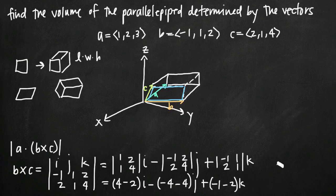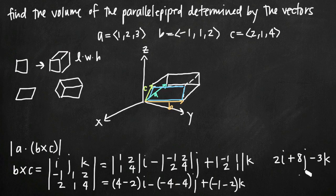Writing out the result: 4 − 2 = 2, so we get 2i. Then −4 − 4 = −8, and we have minus a negative 8, so that's +8j. Then −1 − 2 = −3, so minus 3k. We can also write this cross product of b and c as the vector (2, 8, −3), taking the coefficients on i, j, and k.